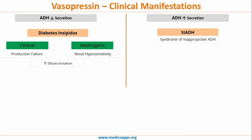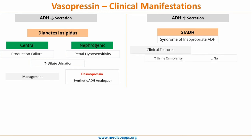Both central and nephrogenic diabetes insipidus share a similar feature: increased dilution of urine. The management is to give a synthetic ADH analog, which is desmopressin.